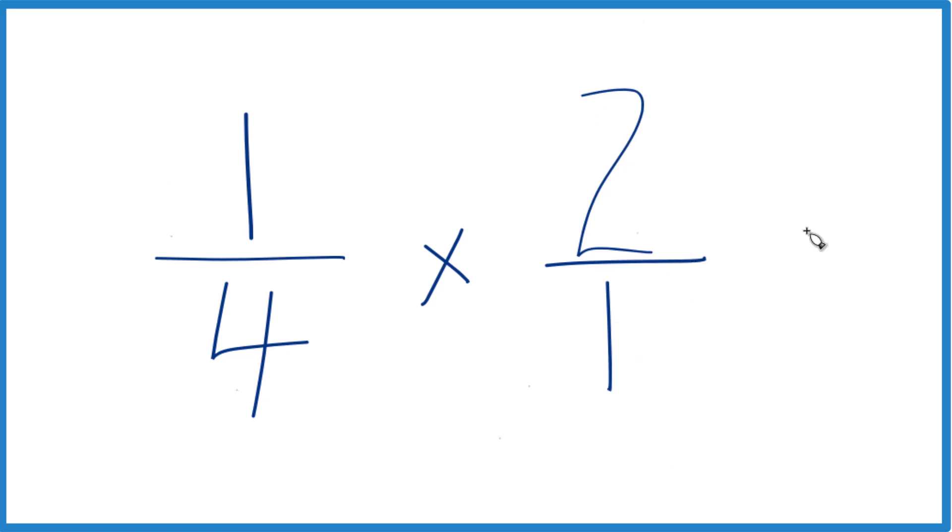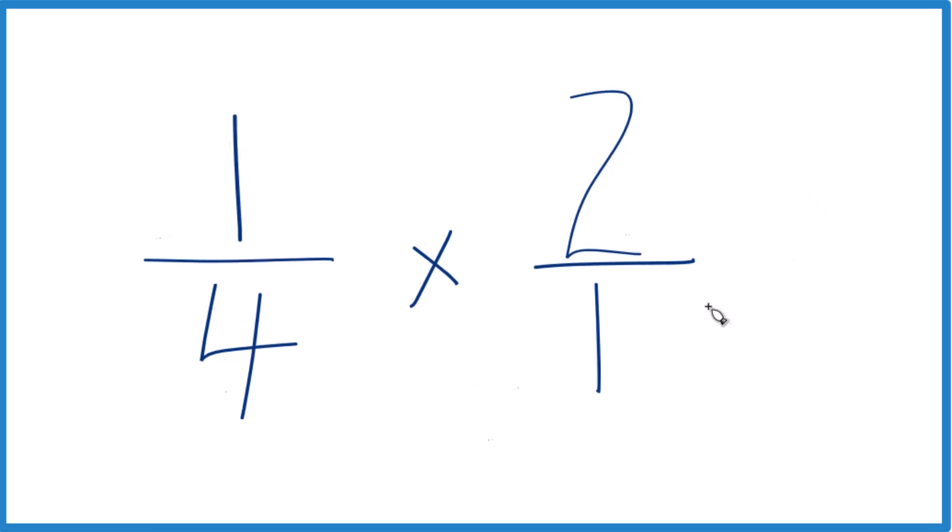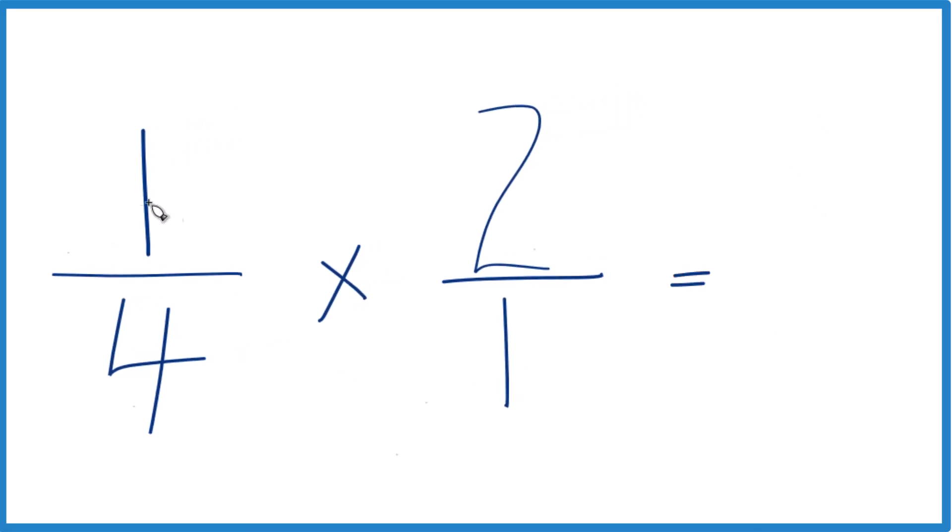But now the numerators line up and the denominators line up. And for multiplying fractions, that really helps because we take one times two, that gives us two. And then we take the denominators, four times one, that gives us four.